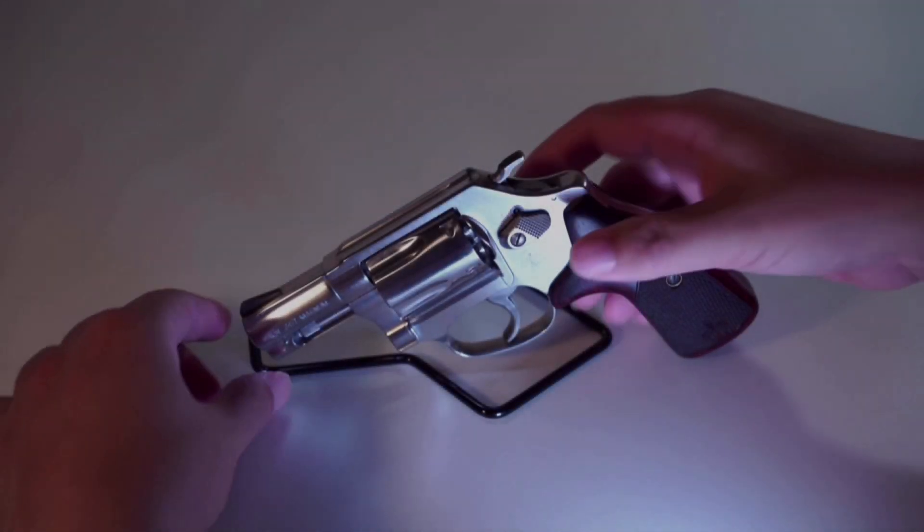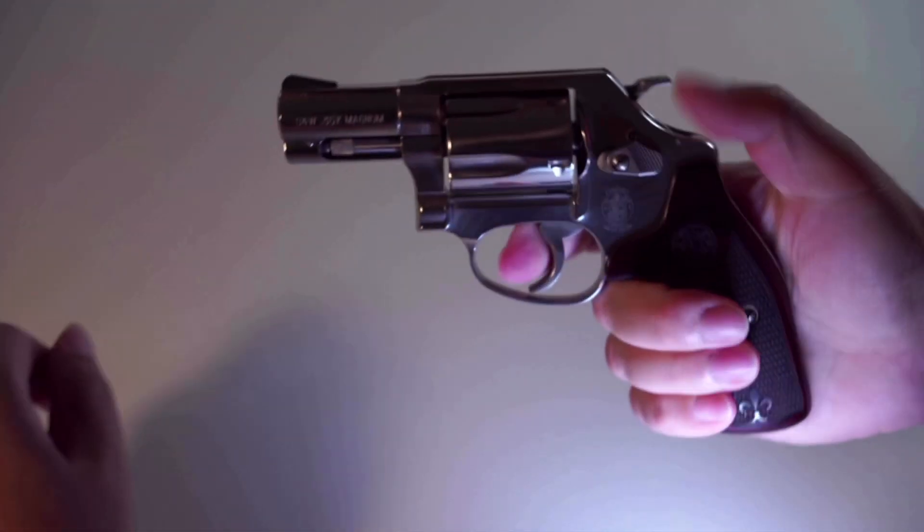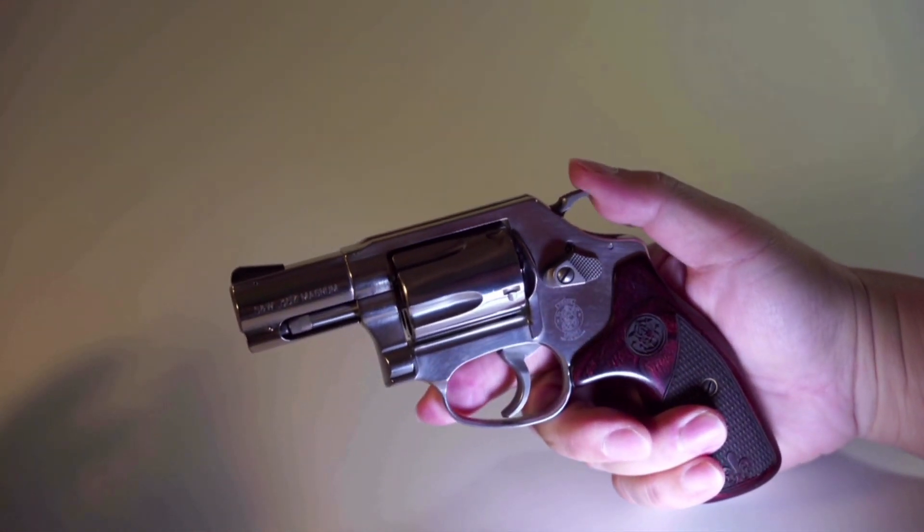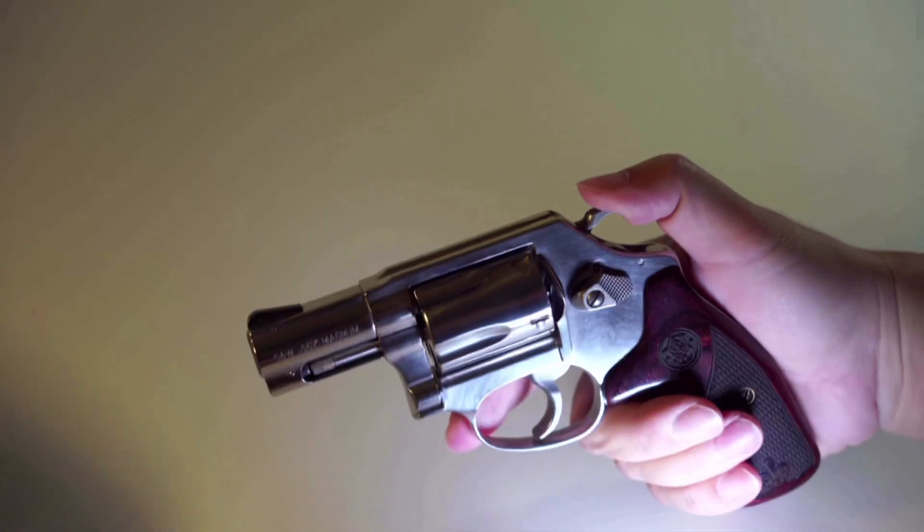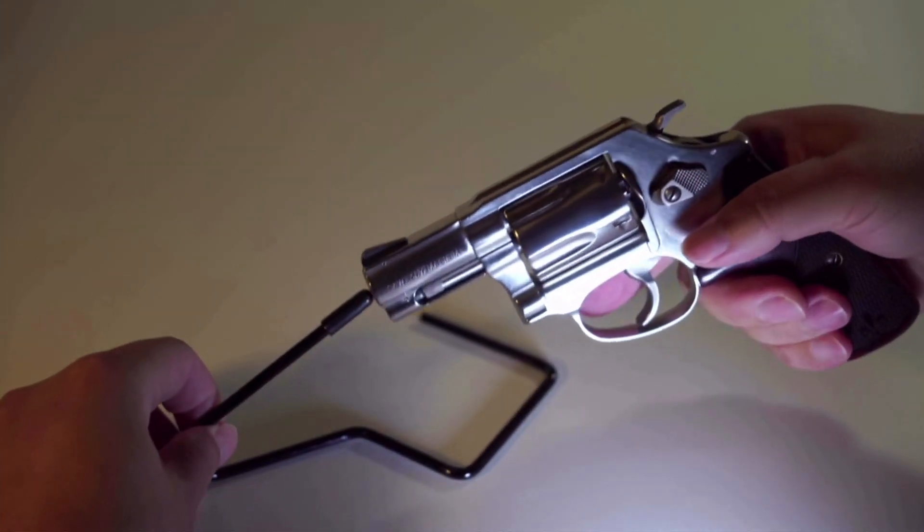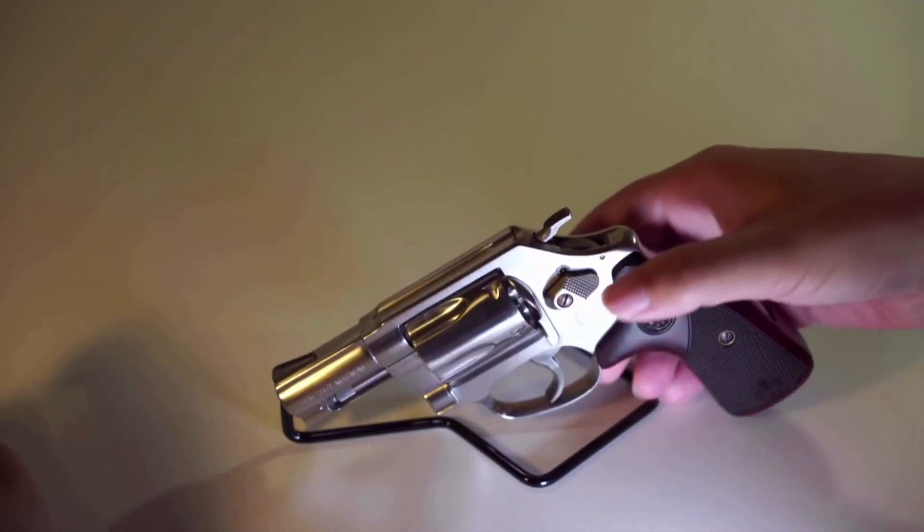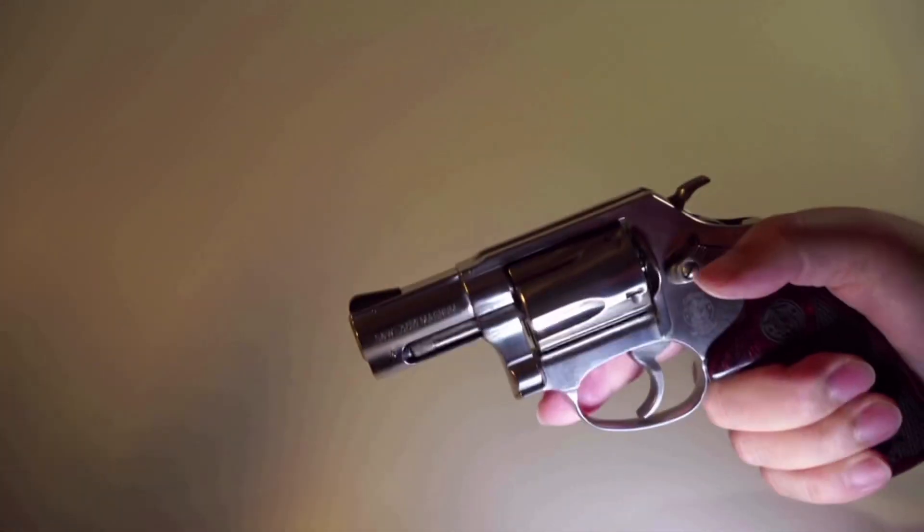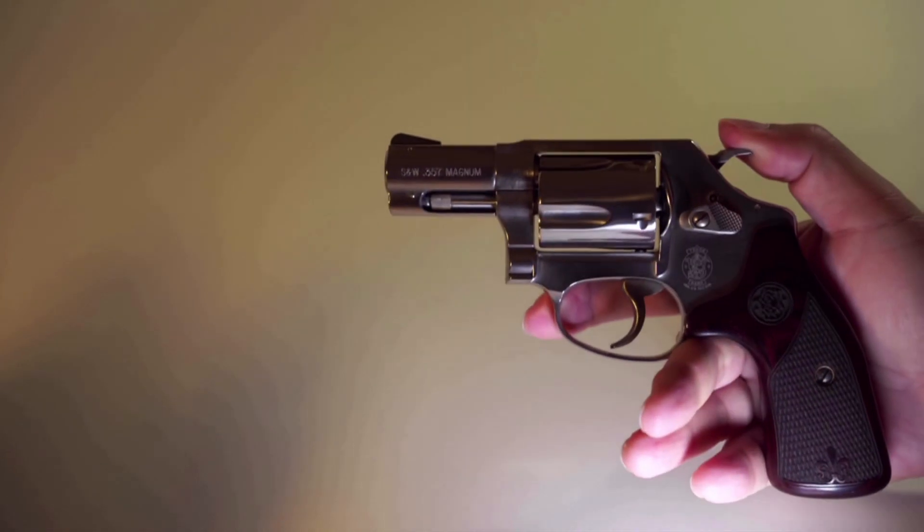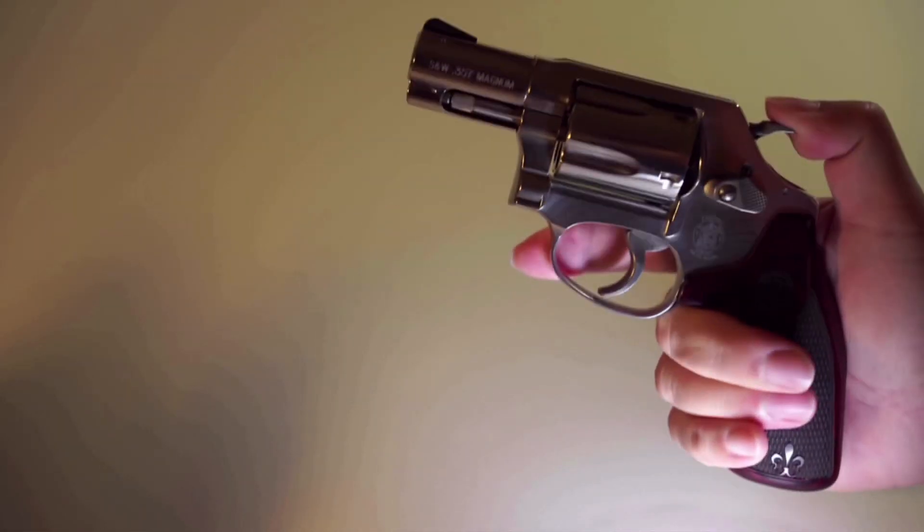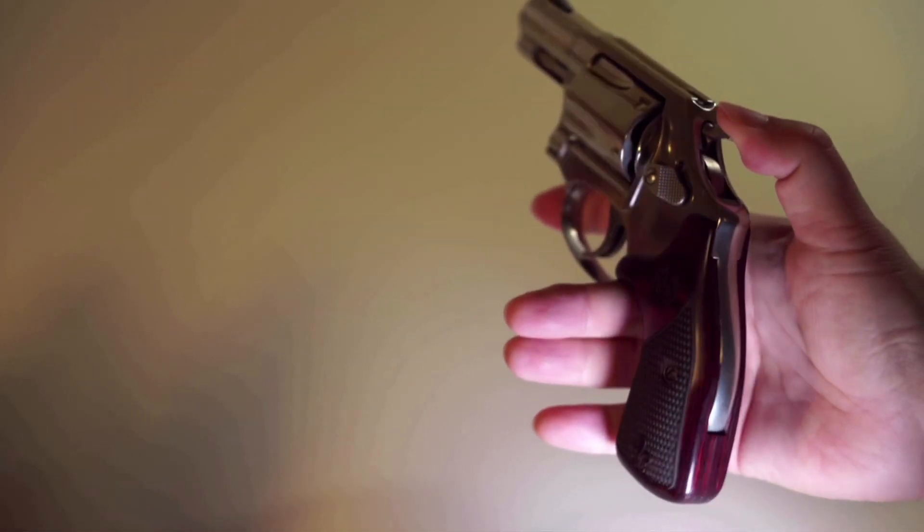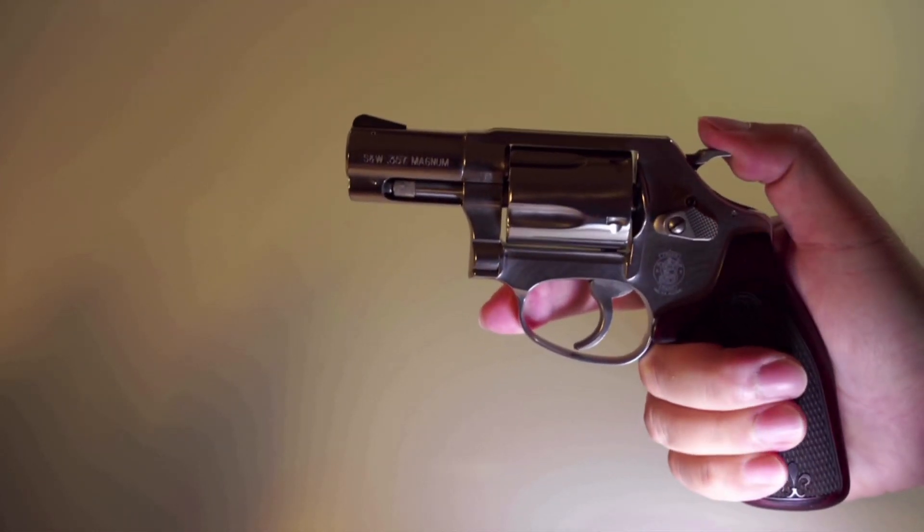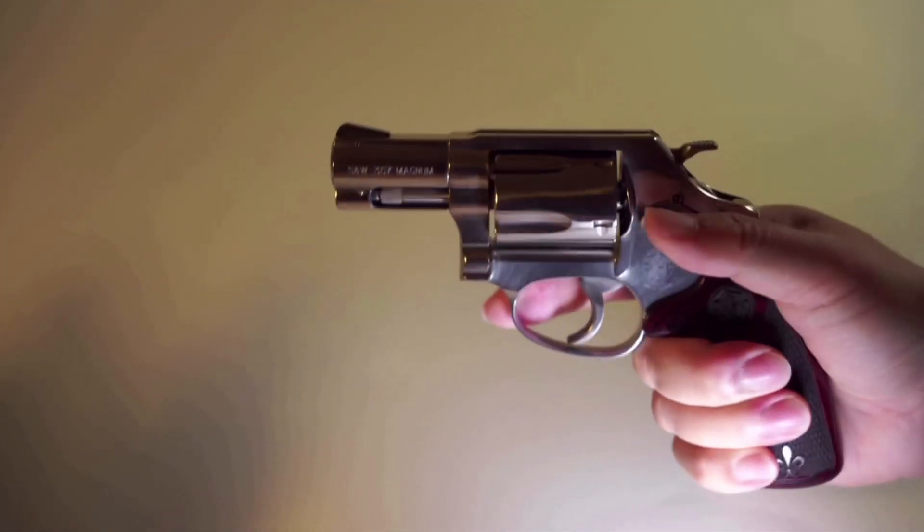The first grip I want to show is made by a small company in Illinois, it's called Altamount. This grip model is called the i-Tie. It's basically a conversion grip. It converts the Smith Wesson J-Frame round butt to square butt.